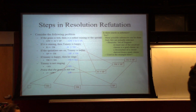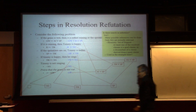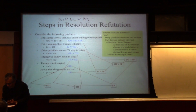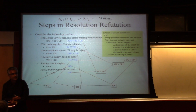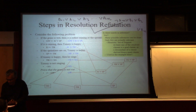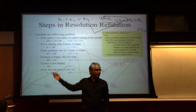A student asks for clarification about resolution. The resolution rule basically says: the most general statement of resolution is, you can say A1 or A2 or A3 ... or An, and then followed by not-An or B1 or B2 ... or Bn. Then you can just remove An and not-An and write A1 or A2 ... or A(n-1) or B1 ... up to Bn. That's what resolution is.